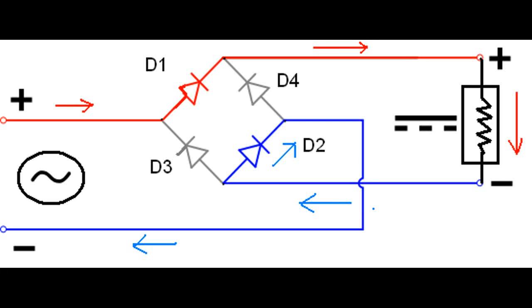So, current flows through D1 and to the load resistance. From there, it flows back to the source through diode D2. Current will not flow through D3 and D4 as it is reverse biased.